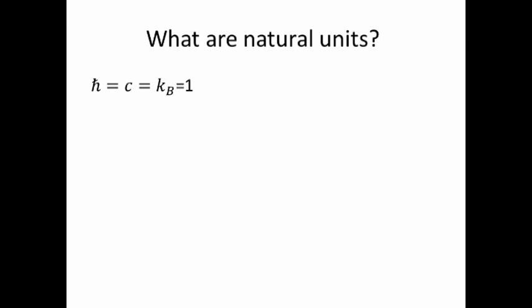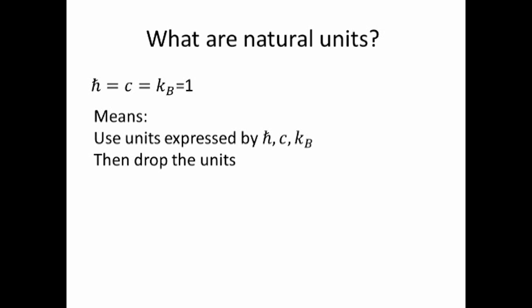Natural units are commonly introduced by setting Planck's constant equal to the speed of light equal to Boltzmann's constant equal to one. That is of course nonsense. What it means is that we use units expressed by h bar, c, and k_B and then just not write them.